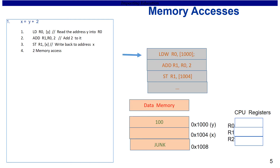Let's look at memory access. Take a C code: x = y + 2, where x and y are both integers. The compiler translates this into three assembly statements: the first reads the value at address of y into register r0, the second adds r0 to 2 and moves the result to r1, and the third writes r1 back to the address of x. The compiler has assigned variable y the address 1000 and variable x the address 1004.